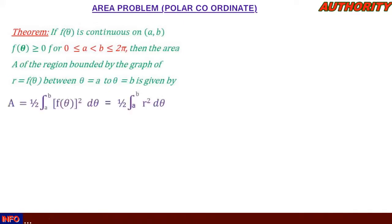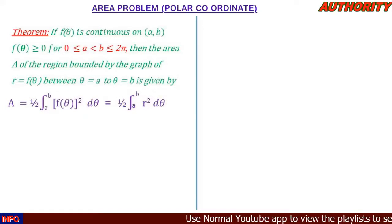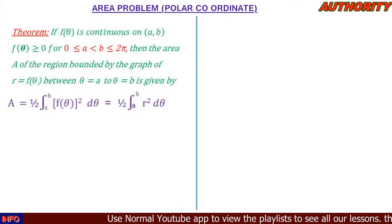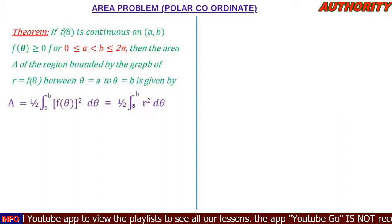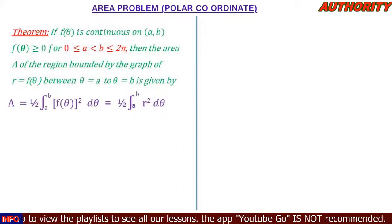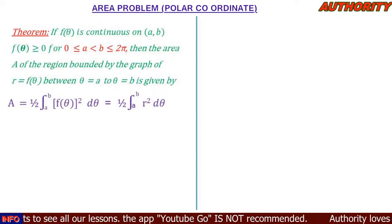A equals one-half times the integral from a to b of f of theta squared d-theta, which is also the same as one-half times the integral from a to b of r squared d-theta. So when you are given a polar coordinate area problem, we are going to use this formula.